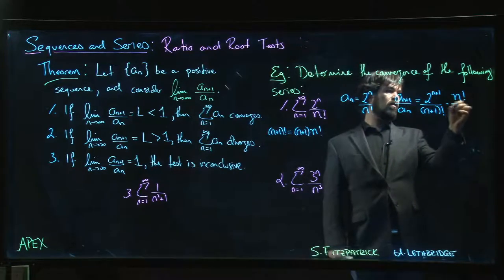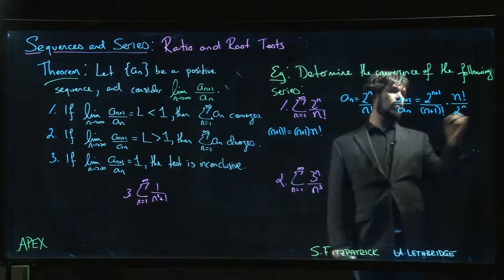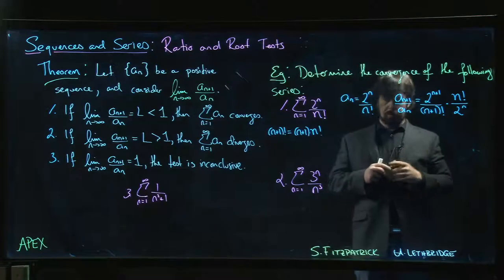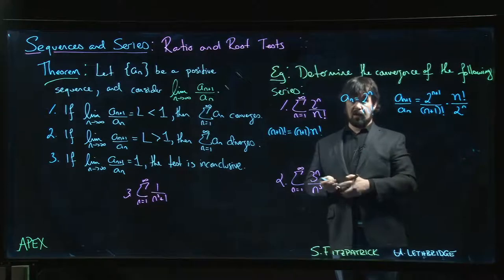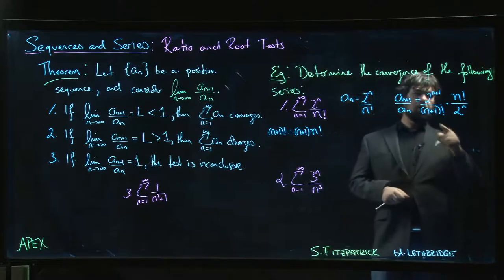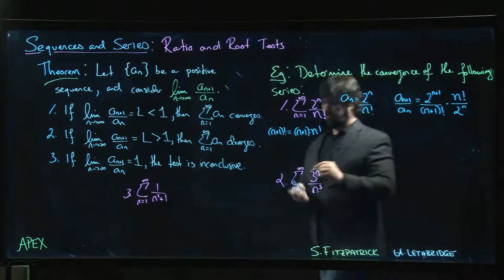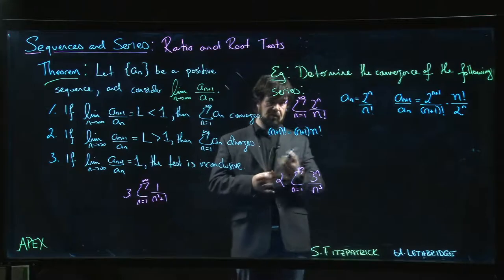So that's n factorial over two to the n. And now we can see that there's some cancellation that goes on. Two to the n plus one, of course we can, might as well, why not mention that one too? Though I think everyone knows this.